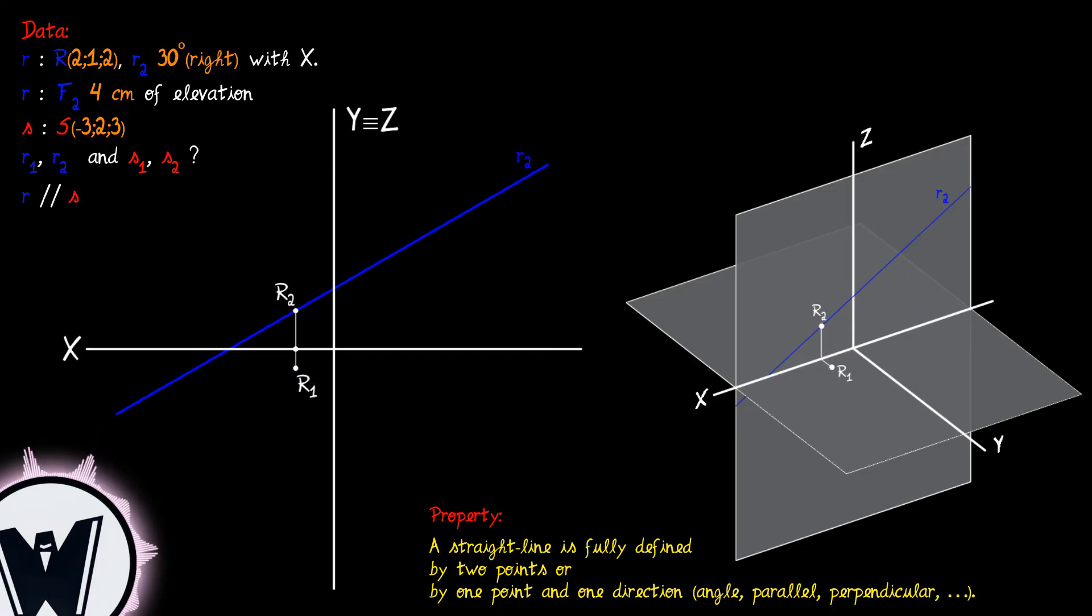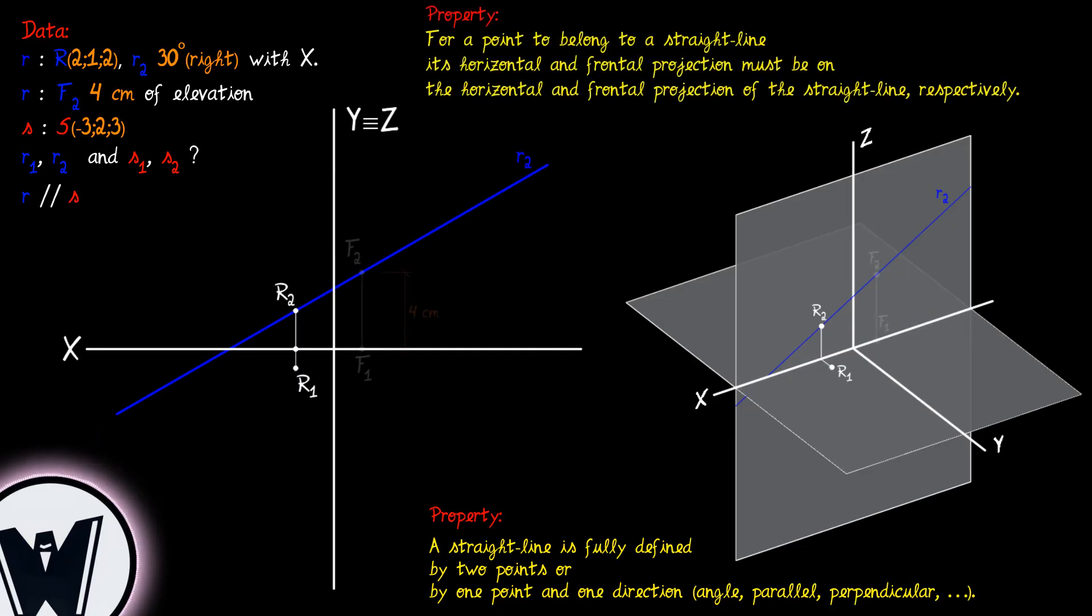So, F2 needs to be over R2 at exactly 4 cm of elevation so that this point can belong to this straight line, following the property for a point to belong to a straight line.